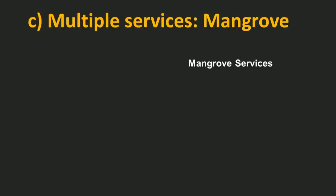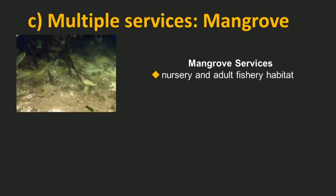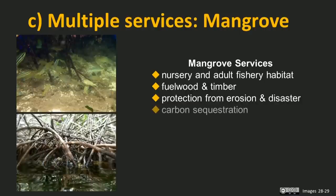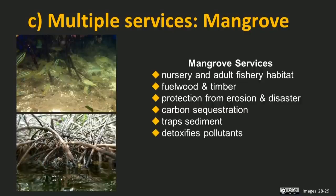Another consideration is that most ecosystems provide more than one service, and valuing only some of them can produce a biased perspective. Mangroves, for example, deliver a wide range of functions: nursery and adult fish habitat, fuel wood, timber, coastal erosion protection and disaster mitigation during tsunamis, carbon sequestration for greenhouse gas mitigation, sediment trapping that keeps reefs healthier, and even detoxification of pollutants.